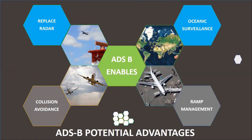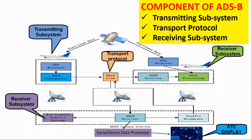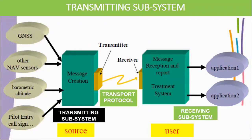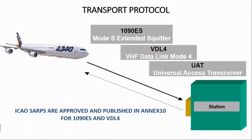The ADS-B data link supports a number of airborne and ground applications: cockpit display of traffic information, airborne collision avoidance, improved search and rescue, airport ground vehicle and aircraft rescue and firefighting vehicle, and operational needs including oceanic control. ADS-B consists of three components: transmitting subsystem, transport protocol, and receiving subsystem. The transmitting subsystem generates messages in the aircraft and broadcasts them to all. Currently there are three kinds of data link: Mode S 1090 MHz extended squitter, VHF digital link mode 4, and universal access transceiver. ICAO has approved the 1090 MHz Mode S extended squitter technology for the data transport protocol to ensure global interoperability.